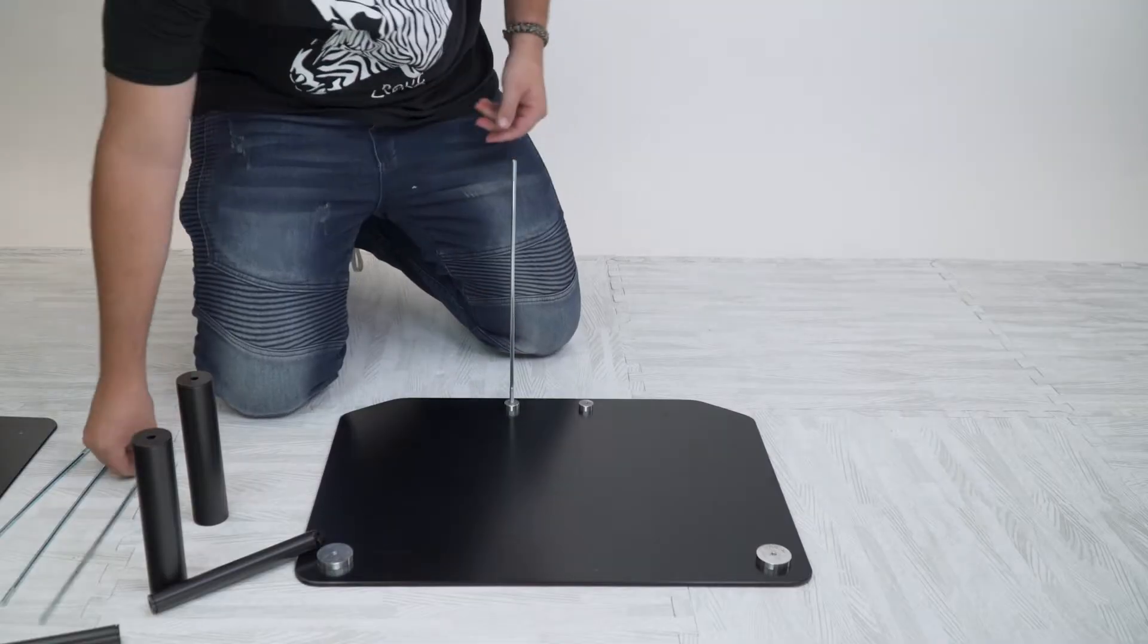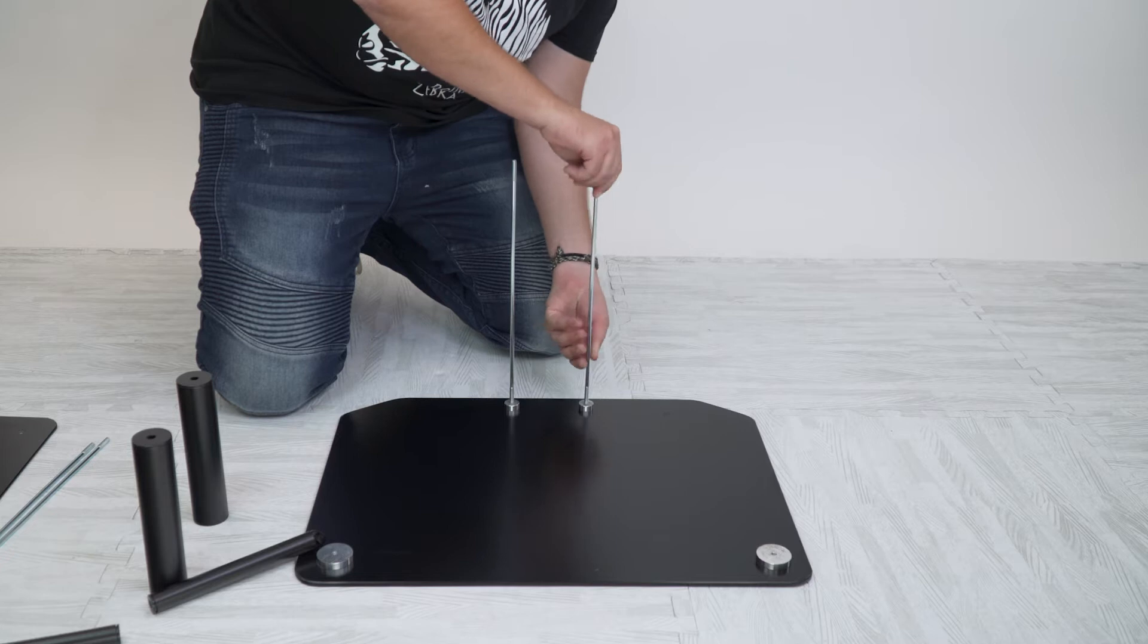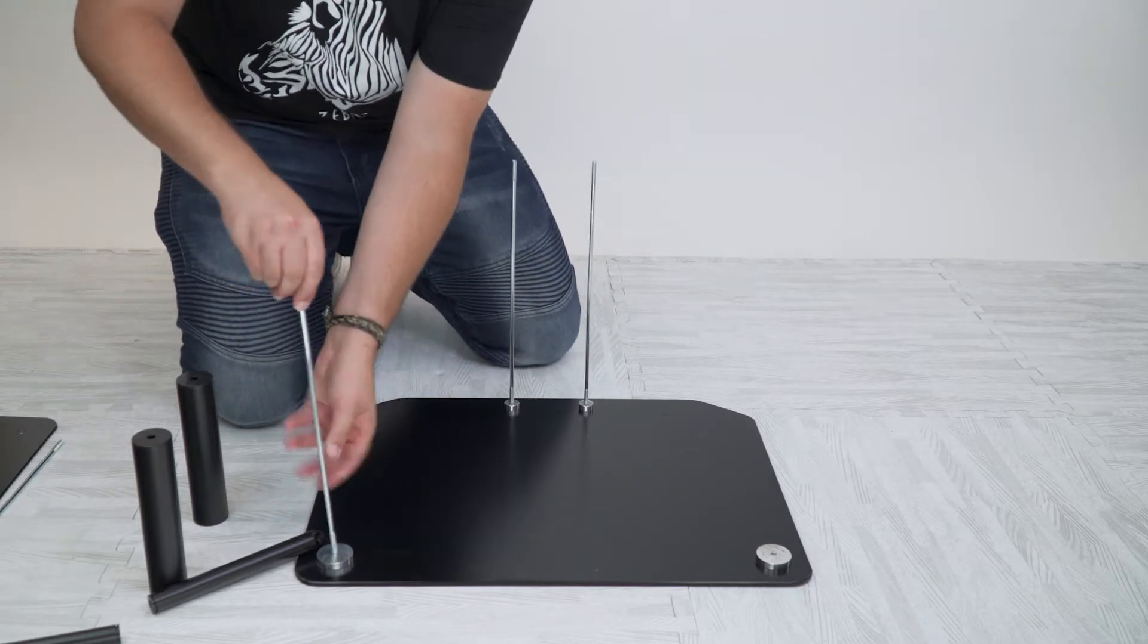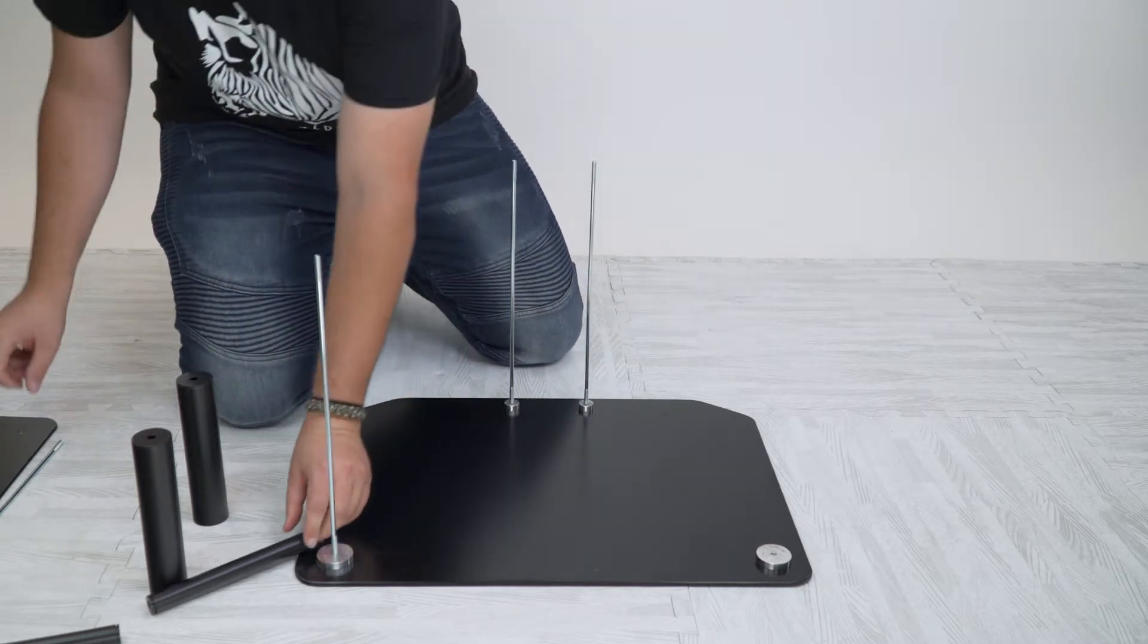First things first, we're going to take the base of the TV stand and place it on the ground. Then we're going to take four out of the eight metal rods and hand screw them in.